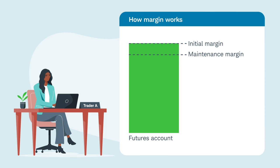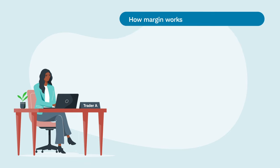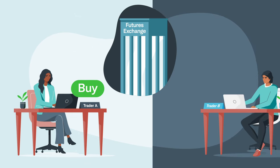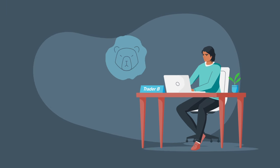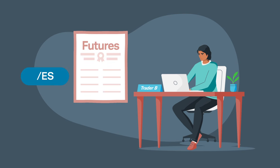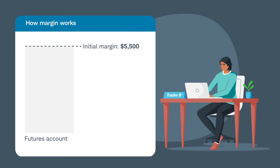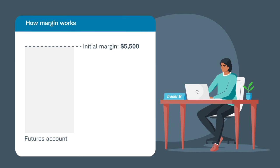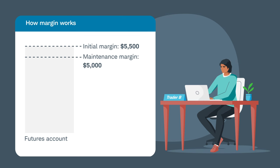For this example, Trader A has an initial margin of $5,500, her maintenance margin is $5,000, and her account balance is also $5,500. The cash for the initial margin is automatically set aside in her account once the order is entered. Trader A's buy order is routed to the exchange and is connected with Trader B's sell order. Trader B is bearish on the S&P 500 and shorts an ES contract. Trader B also puts up the initial margin of $5,500, because the buyer and the seller put up the same initial margin. He also has an initial margin requirement of $5,500 and is held to the maintenance margin of $5,000, the same as Trader A.